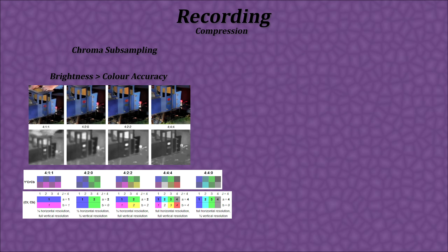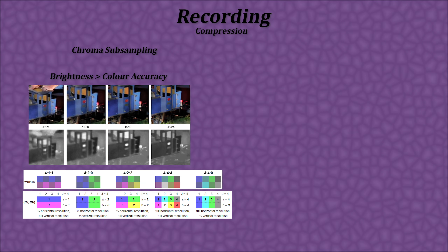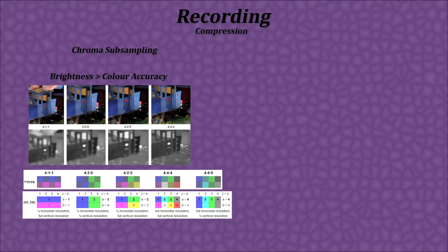Each level of subsampling — whether it's 4:2:0, 4:2:2, or 4:4:4 — relates to how many chroma samples it keeps in a given theoretical area. In essence, the more chroma data that you keep, the closer the encoded video will look compared to the original.